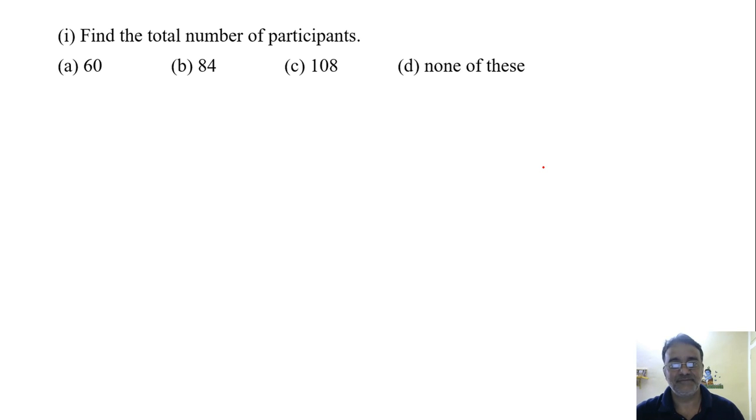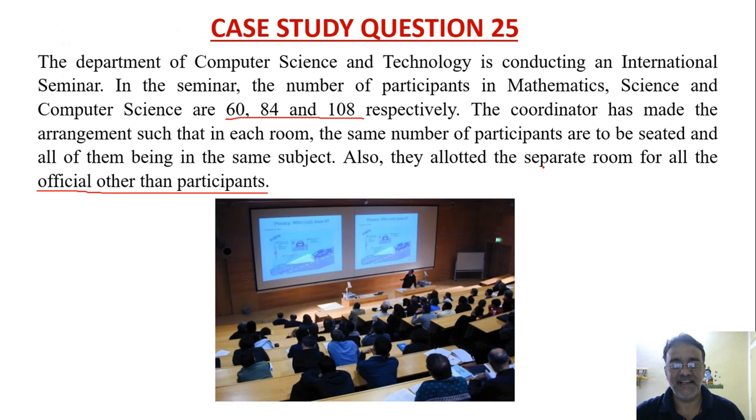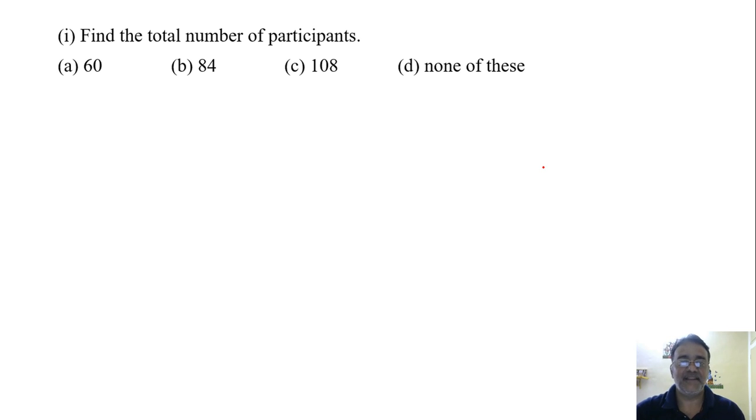What is the total number of participants? This will be very easy. 60, 84, and 108, we have to add up. Some students might quickly tick this option, but actually the total number is 60 + 84 + 108 = 252. So which option is correct? D, none of these.